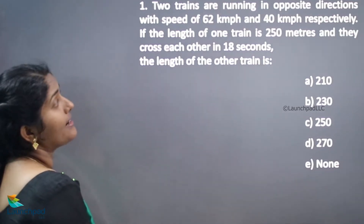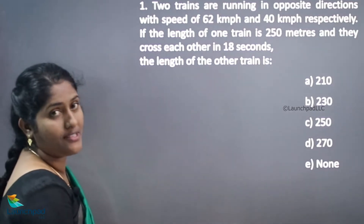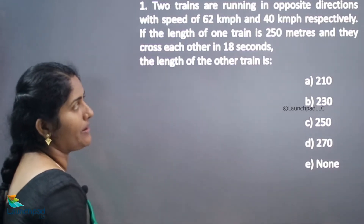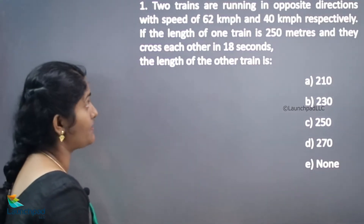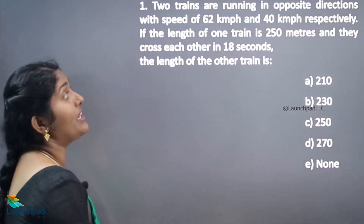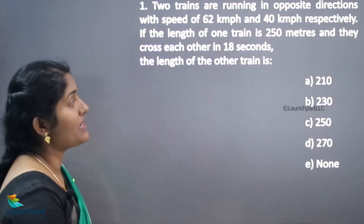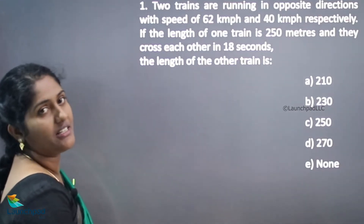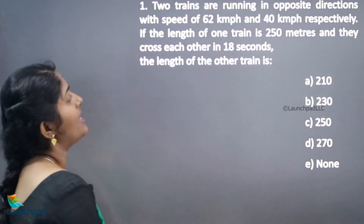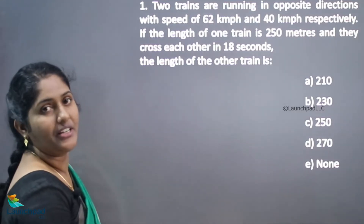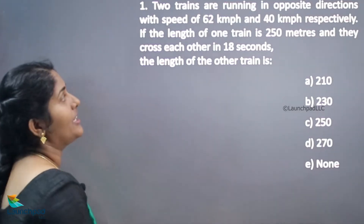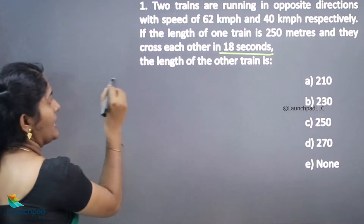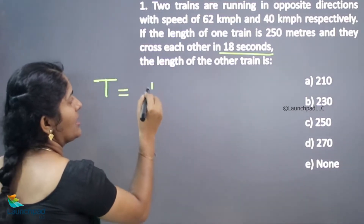Two trains are running in opposite directions with speeds of 62 km per hour and 40 km per hour respectively. The length of one train is 250 meters and they cross each other in 18 seconds. We need to find the length of the other train — so the given data is the time taken to cross each other.